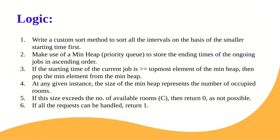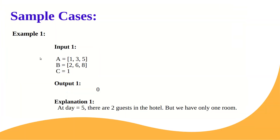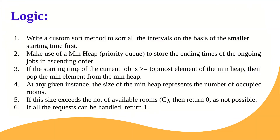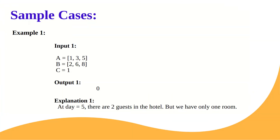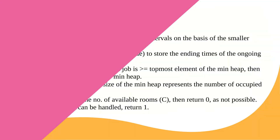Now let's discuss the logic. We are given interval arrays of start and end dates. The first step is to sort these arrays. We sort because we need to ensure bookings are processed in sequence. We write a custom sort to order all intervals by the smaller starting time first, so that every request is handled in order without skipping ahead.